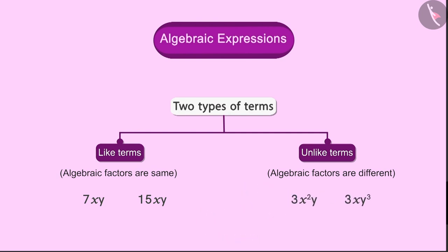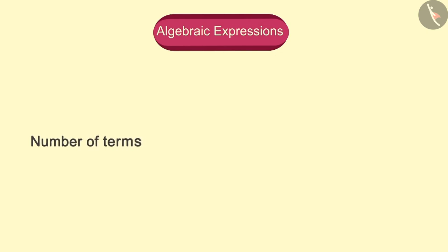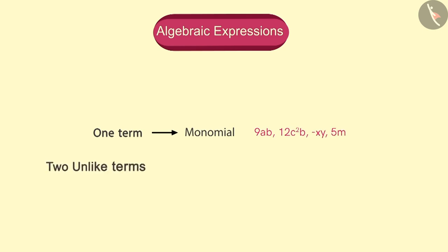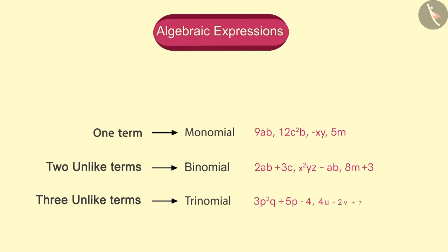On the basis of the terms present in an expression, we can classify the expressions. Expression which has only one term is called a monomial. Here are some examples of monomials. An expression which has two unlike terms is called binomial. Here are some examples of a binomial. Similarly, the expression with three unlike terms is called a trinomial.